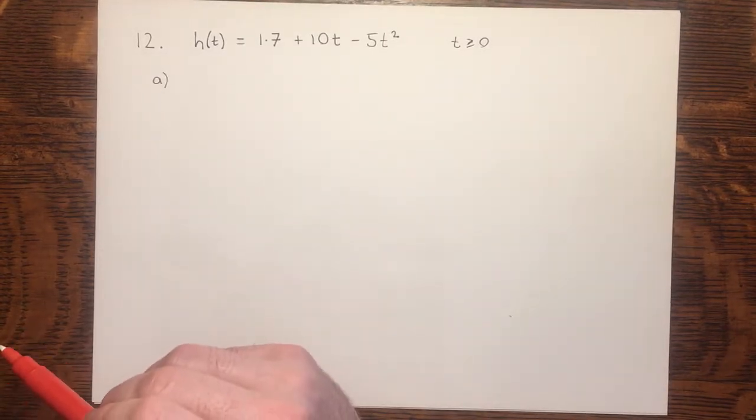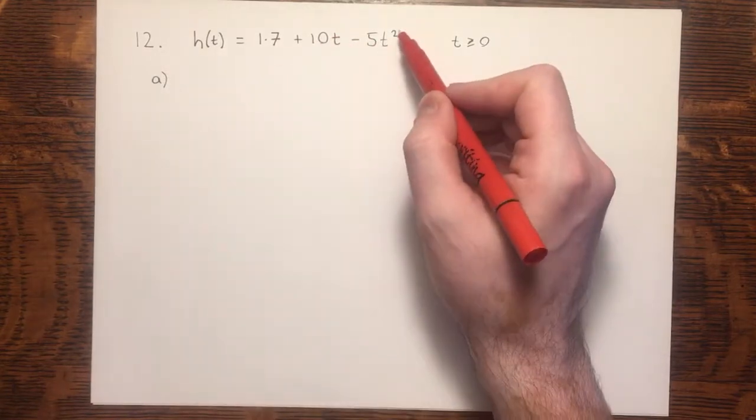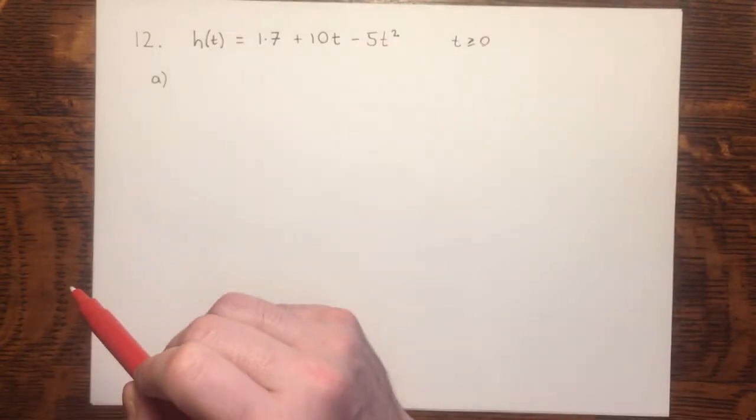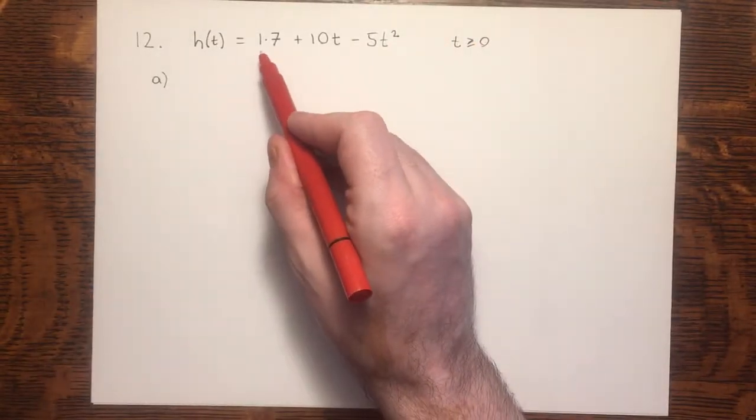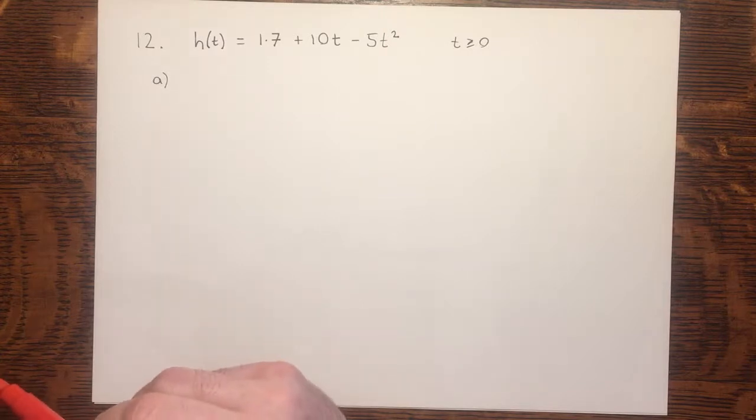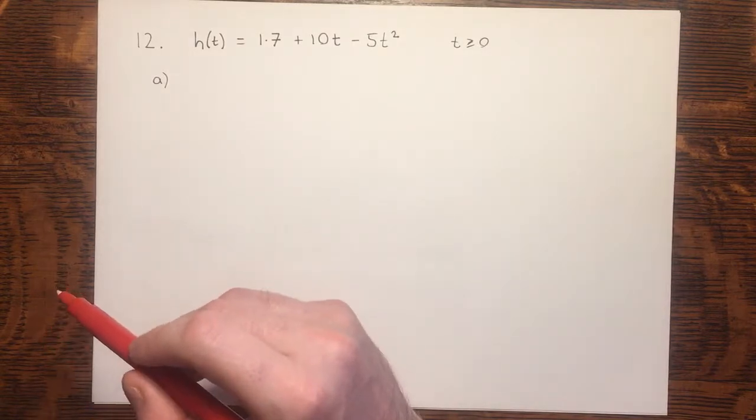At time equals zero, zero times ten, that's nothing. Zero squared times five, that's nothing. At time equals zero, the height is 1.7. So just before he launches the shot put, the shot put is at 1.7. Let's refer to the question. An athlete launches a shot put from shoulder height. This is the shoulder height, the starting point where he launches it from.